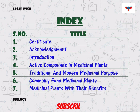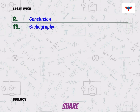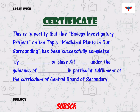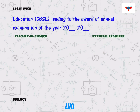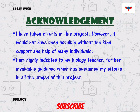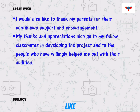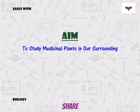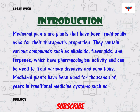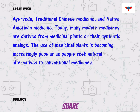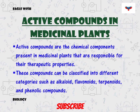Firstly we will write the content of our project in the table of contents index. After that we will make the certificate and acknowledgement in a neat and clean manner. We will write the aim or topic of the project along with its brief introduction. We will also mention the active compounds or chemical compounds present in medicinal plants.